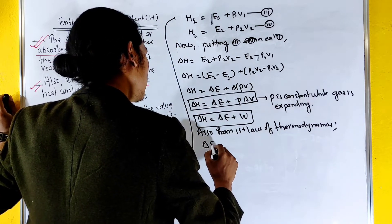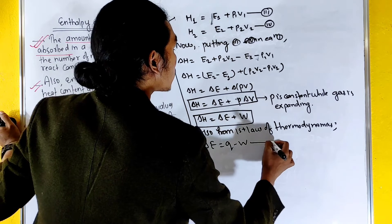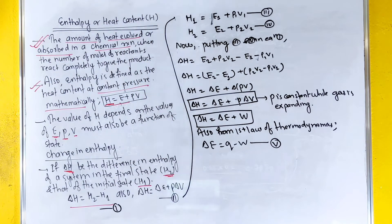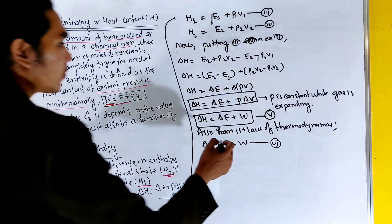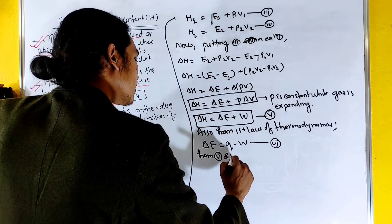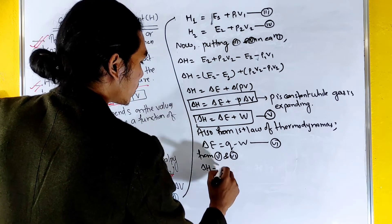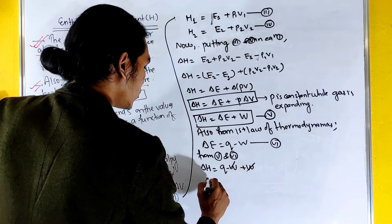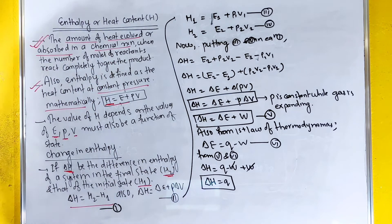From the first law of thermodynamics, delta E equals q minus w. Since w equals P delta V at constant pressure, substituting gives us delta H equals q. This means the enthalpy change equals the heat content of the system.